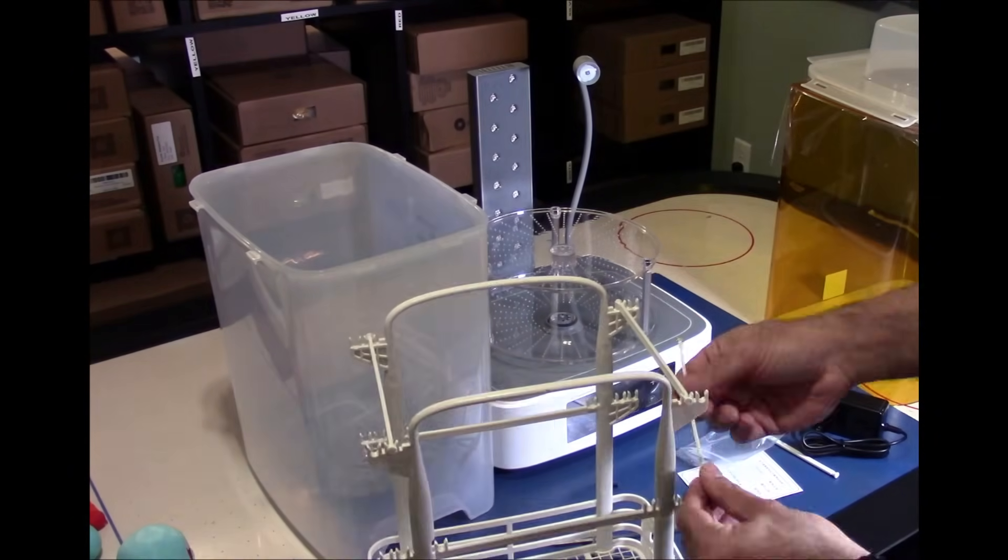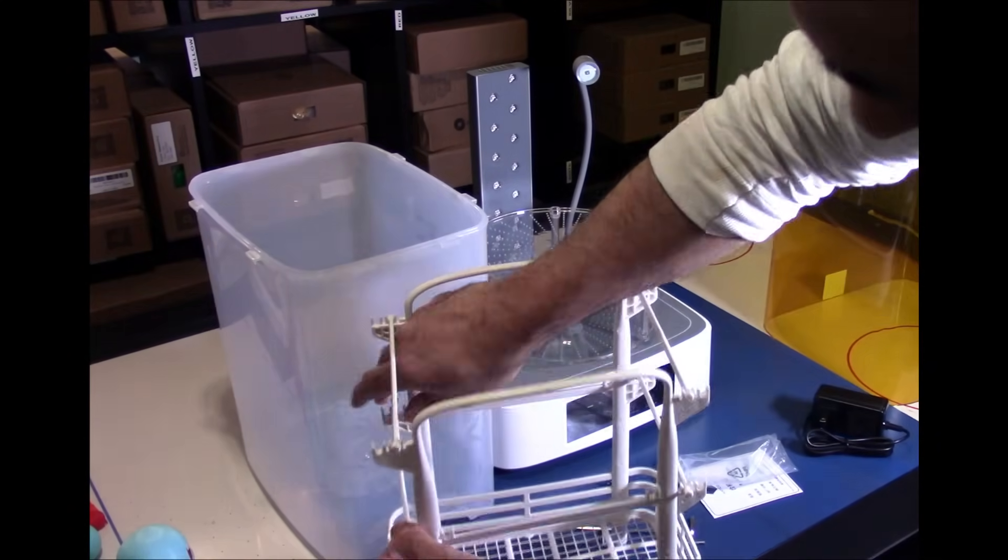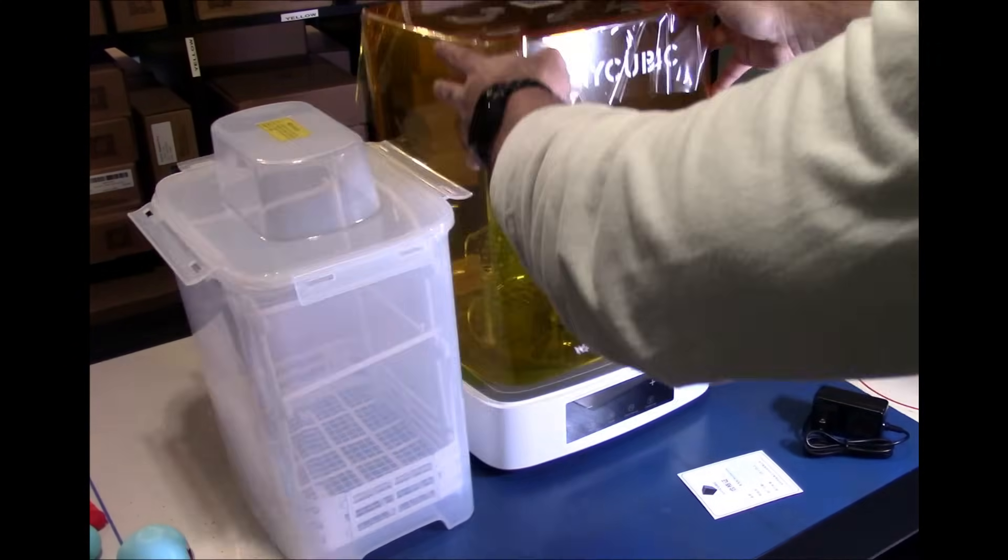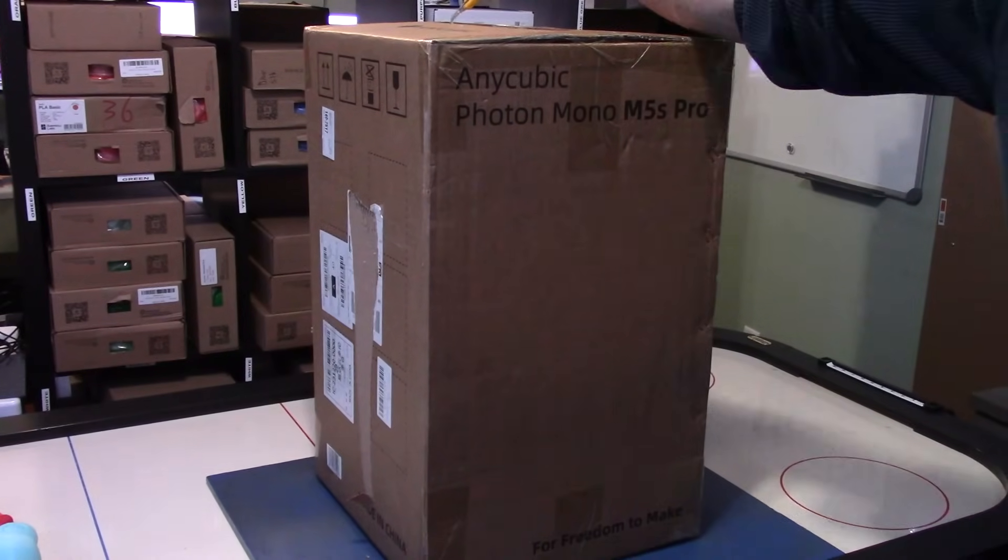Using this is as easy as clicking Power On, setting up either the wash bin with IPA or water depending on your resin, or setting the curing trays, then selecting either Wash or Cure setting, setting the amount of time, and clicking Start.